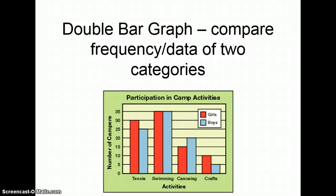Double bar graphs compare frequency or data of two different categories. So we're still comparing categories: tennis, swimming, canoeing, crafts. The frequency of it. But now we're comparing the girls and boys. So in this case, in the case with tennis, I can see how many girls participate in tennis versus how many boys participate in tennis. And I can compare not only girls to boys, but I can compare across various camp activities.